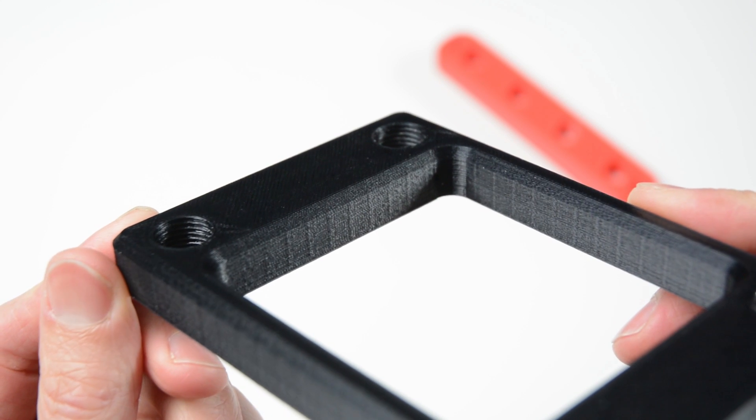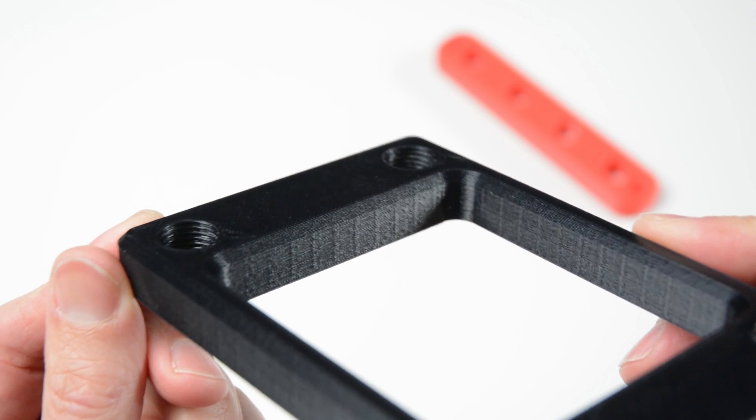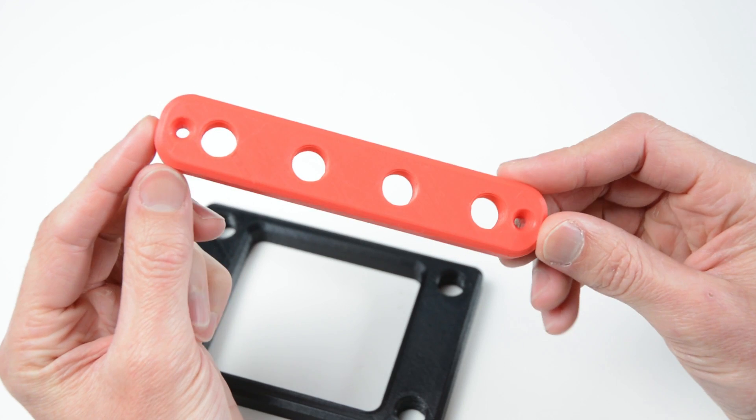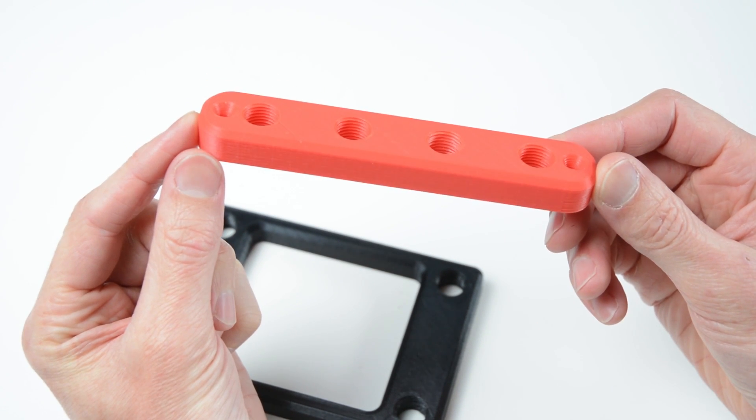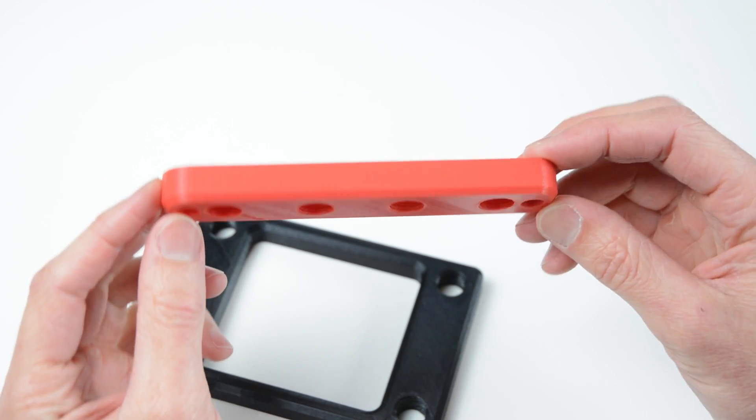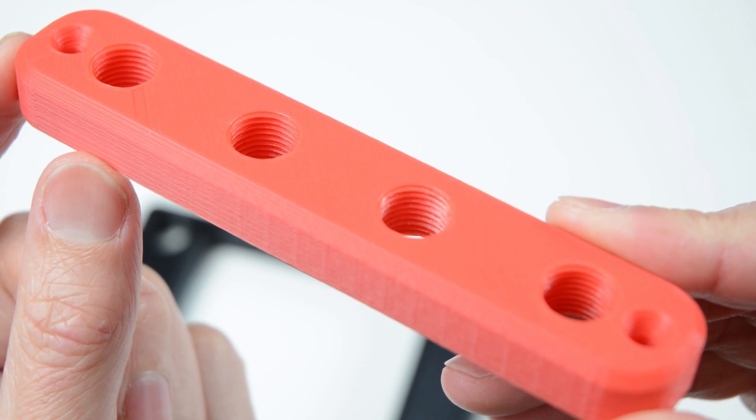The first is a basic portable version with threads incorporated into the base for easy mounting of the pipes. The second base is an inline 4 holder with two countersunk screws at the ends for mounting to a workbench. This version can also be used clamped in a vise.